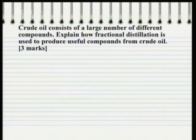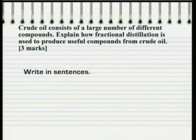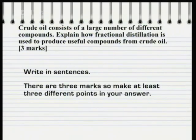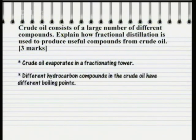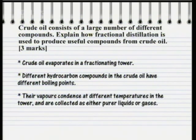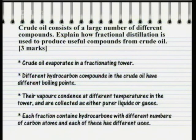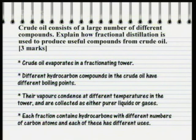Here's a more detailed question on the same subject. Crude oil consists of a large number of different compounds. Explain how fractional distillation is used to produce useful compounds from crude oil. In this question, you're expected to write in sentences about fractional distillation. There are three marks on offer, so you need to make at least three different points. A fairly full answer would go something like this: crude oil evaporates in a fractionating tower. The different hydrocarbon compounds in the crude oil have different boiling points. That means their vapours condense at different temperatures in the tower, and can be collected as purer liquids or gases. Each fraction contains hydrocarbons with different numbers of carbon atoms, and each of these has different uses. Note that there's no need to write lots of detail about the fractionating tower itself and all the different products it produces. There's more about the production of useful organic compounds in the Higher Tier Programme.